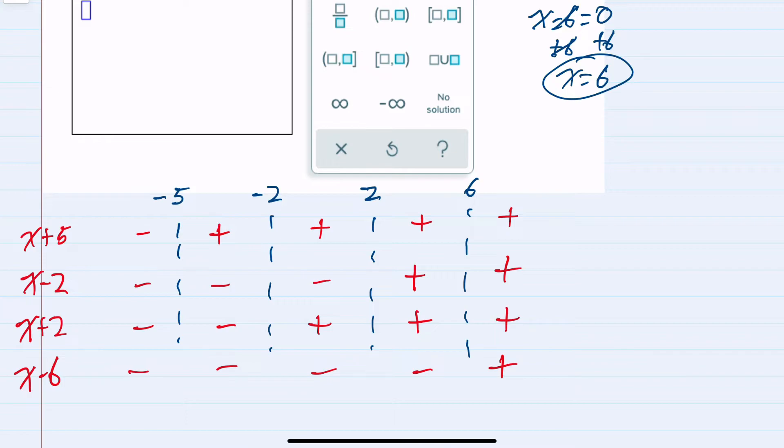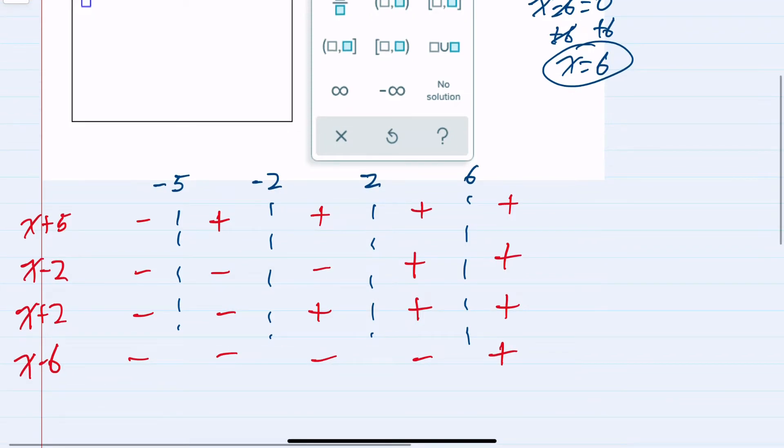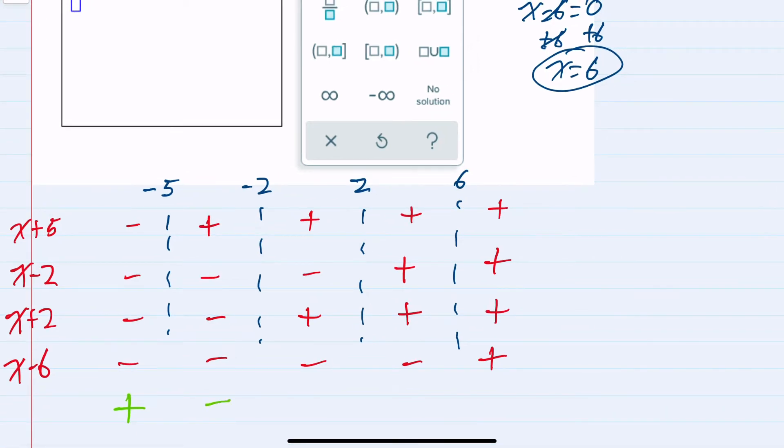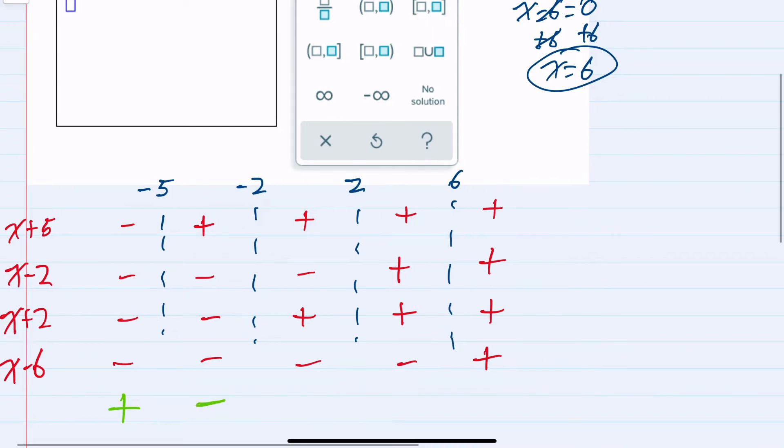And now that we know the signs for each one of these individual factors, if I were to multiply them all together, in this first area, multiplying 4 negatives would give me a positive, because it's an even number of negatives. In this second area, I have 3 negatives, so multiplying would give me a negative. In the next area, I have 2 negatives, so multiplying here would give me a positive.